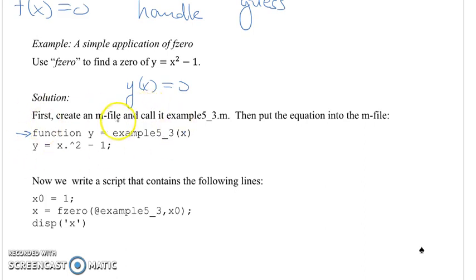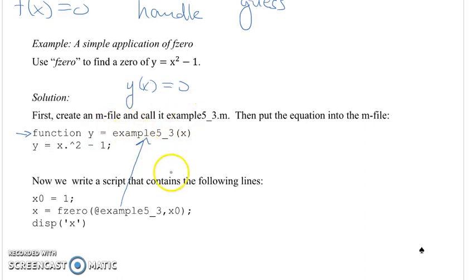Once we make our function, we next write a script. The first line defines our initial guess. The second line calls fzero using the function handle corresponding to the function name — which must match the filename without the .m extension — and the second input to fzero is our initial guess. This call to fzero solves for the x that gives y equal to 0, and then we display that value of x.